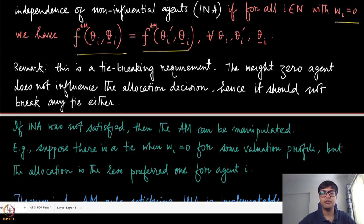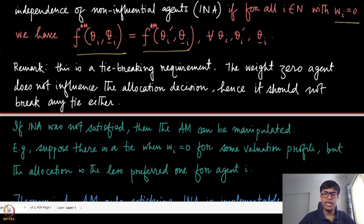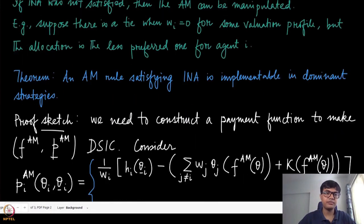If we break the tie by looking at agent i's preference or type, then the affine maximizer might not be truthful anymore. That is a subtle but important point. So, Independence of Non-Influential Agents means that for players whose weights are zero, the outcome of the affine maximizer should not depend on their types — it should be the same for all types of that agent. If we assume this property, we can show that the affine maximizer rule satisfying INA is implementable in dominant strategies.